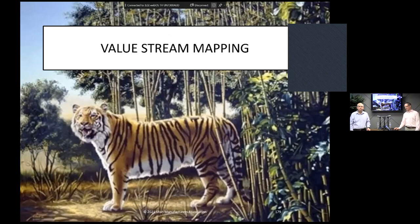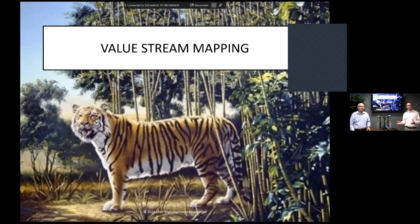Now value stream mapping — that's the end of the Gemba section. We've gone to the Gemba and we're observing the process. We want to map out the process to show how it actually works. And can you find the hidden tiger on the screen? Go ahead and put it in the chat if you can find the hidden tiger.